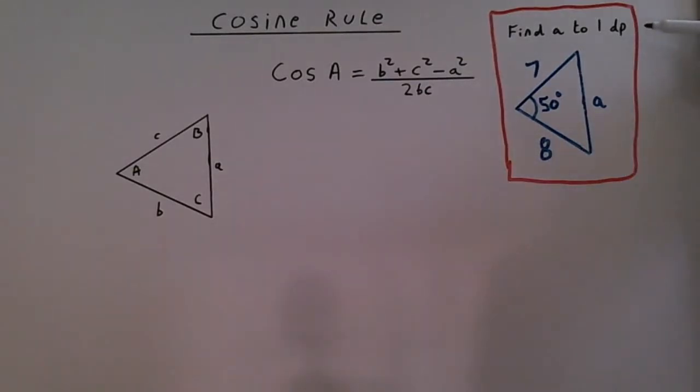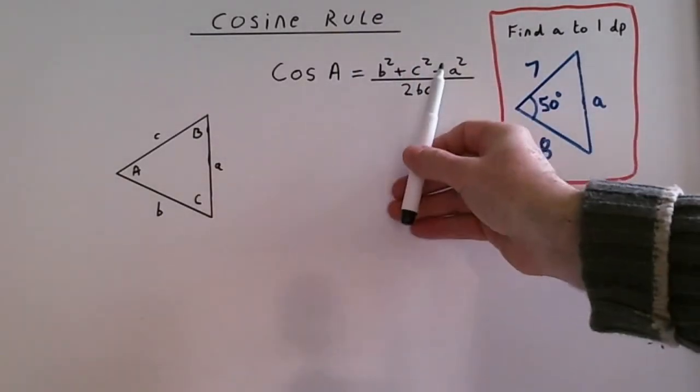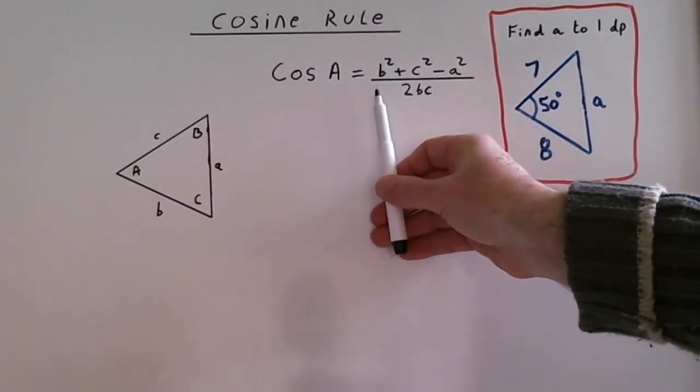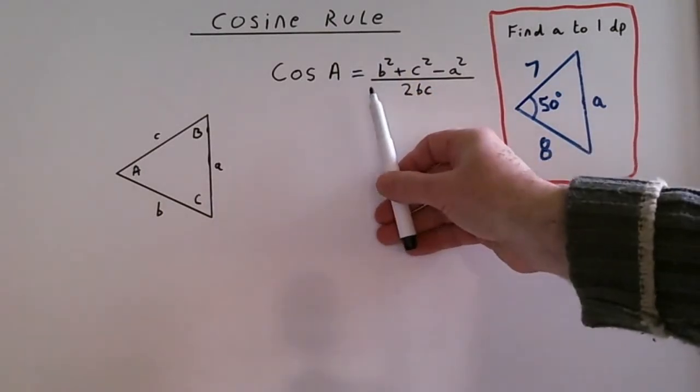Here's another example using the cosine rule. We have to find a to one decimal place, and the formula we're given is cos A equals b squared plus c squared minus a squared over 2bc. You're normally given this on the formula sheet in the higher level paper. This type of problem doesn't occur in the foundation paper in GCSE.